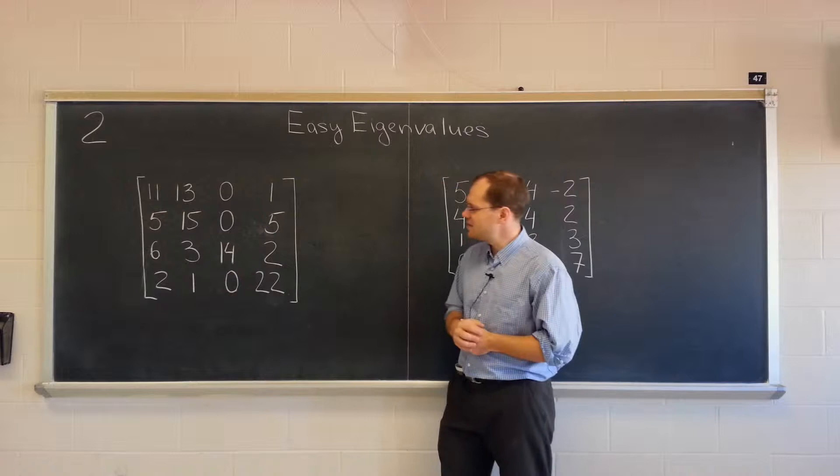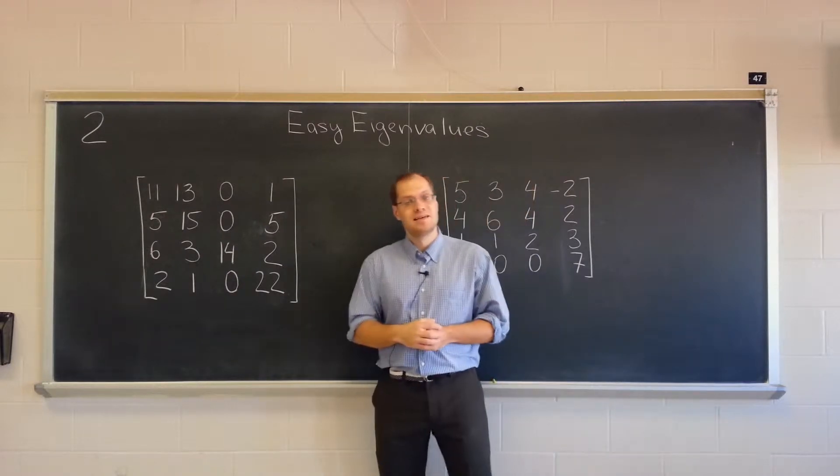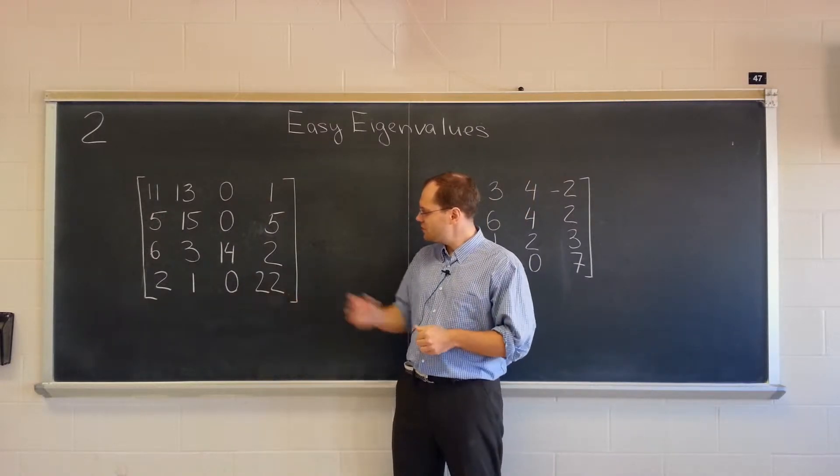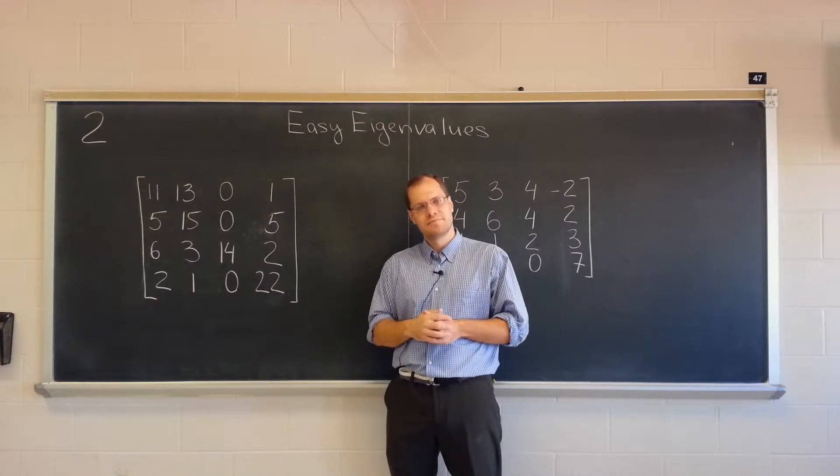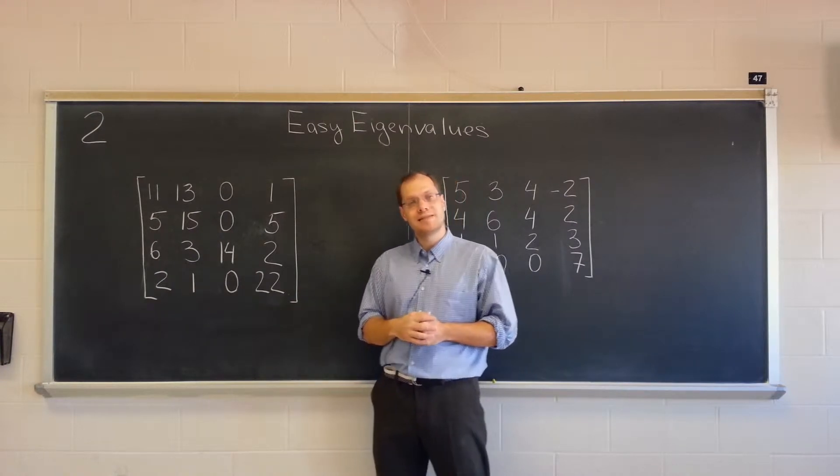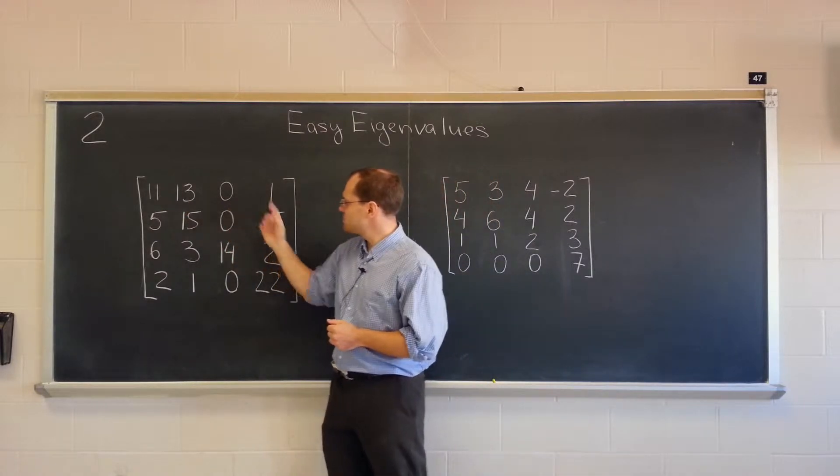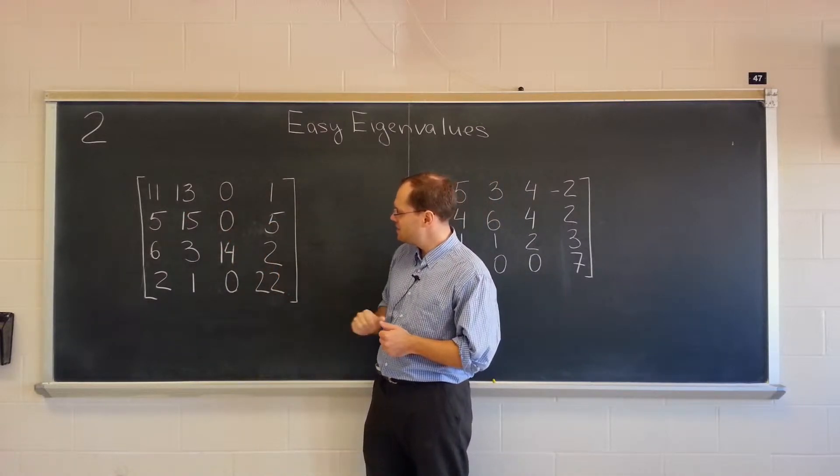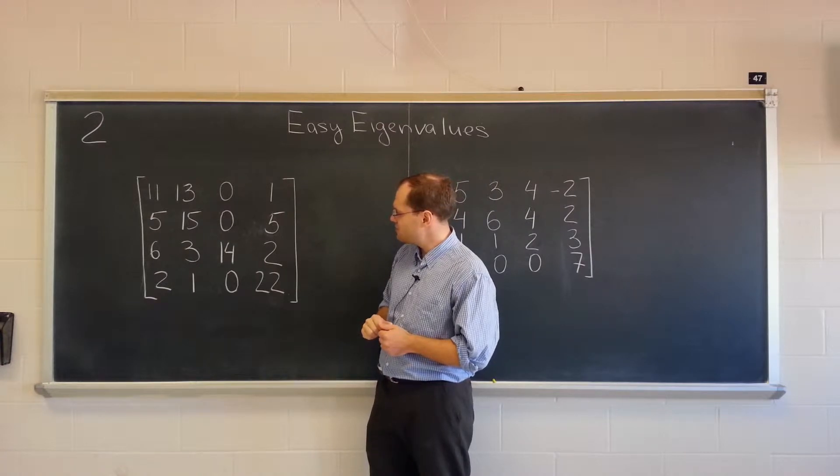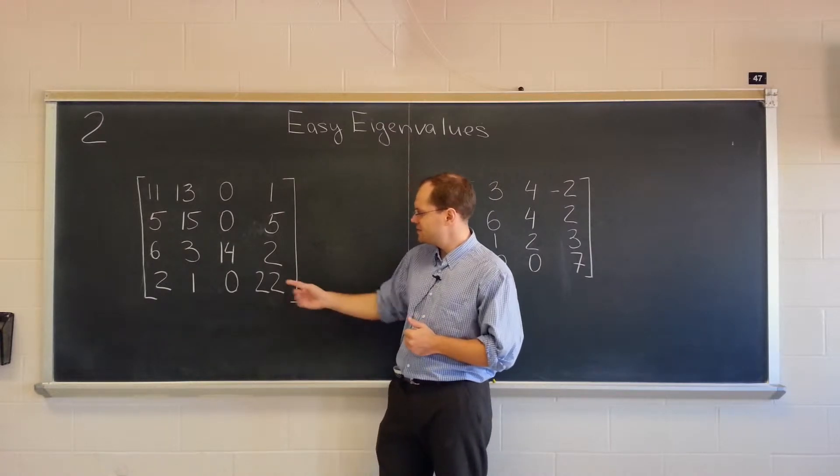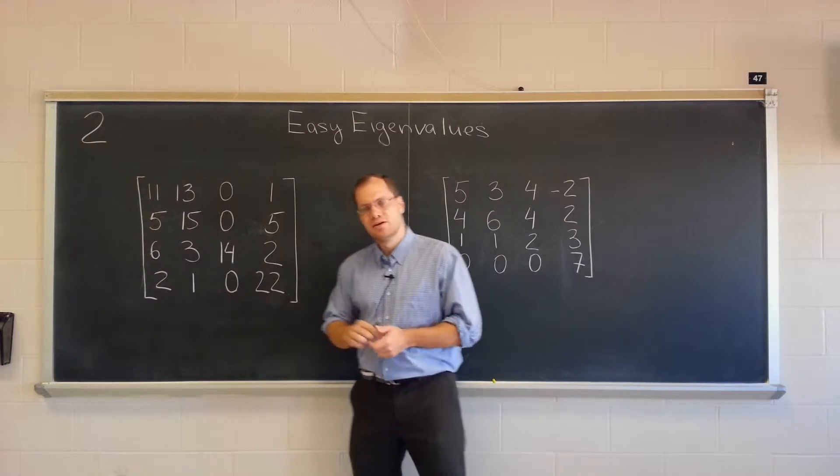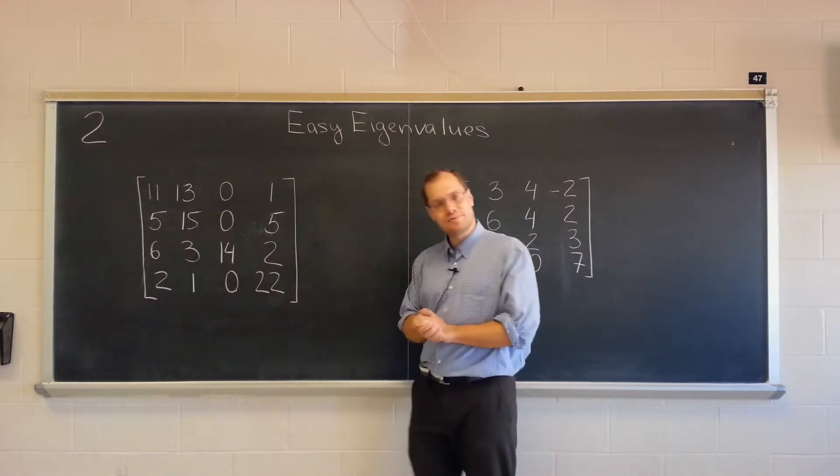The answer is yes. The special feature in this matrix is that every row adds up to the same number. 11 plus 13 plus 1 is 25. These add up to 25. These add up to 25. And these four numbers add up to 25. So each row adds up to 25.